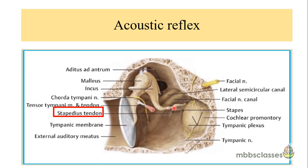First, there is a stiffness — the stapes bone gets fixed. Then it pulls the malleus and stiffens the whole tympano-ossicular chain system, thereby reducing the undue passage of loud noise to the inner ear and thereby protecting the inner ear.